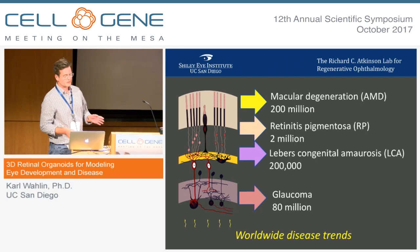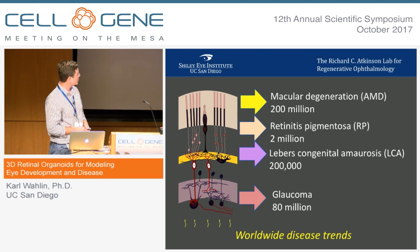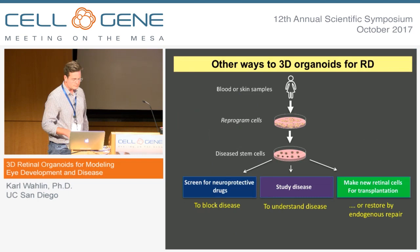There are a lot of different retinal degenerative disorders, including AMD — 200 million people worldwide — RP — 2 million — LCA — another 200,000 — and glaucoma — 80 million. That's a lot of people who are going to have permanent visual impairments.